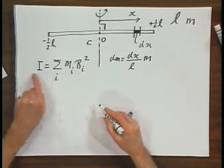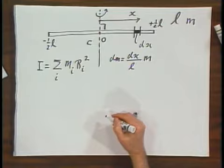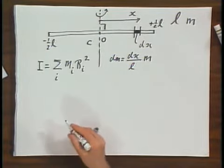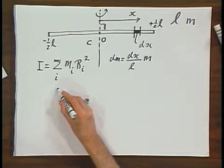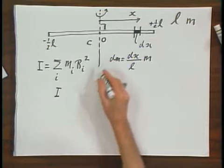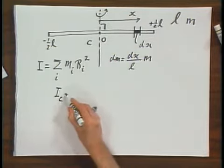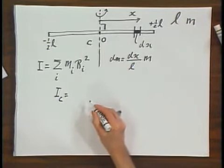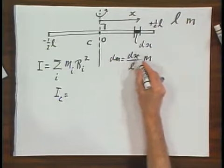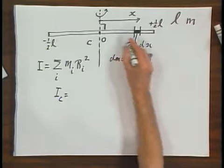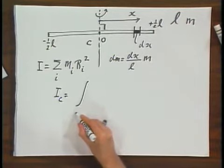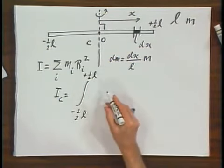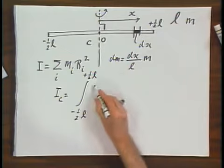And so if now I go to the continuous summation which becomes an integral, then I get I. I'll put a C in there to remind you that it is an axis through the center. Now it becomes an integral over x, and the x goes from minus one half L to plus one half L. I get M over L.